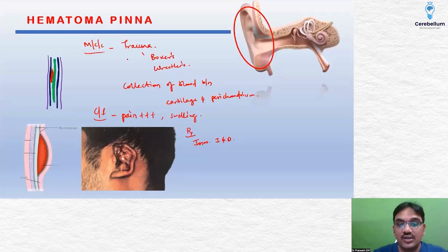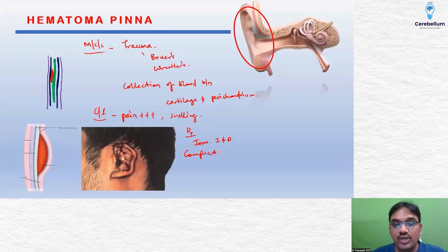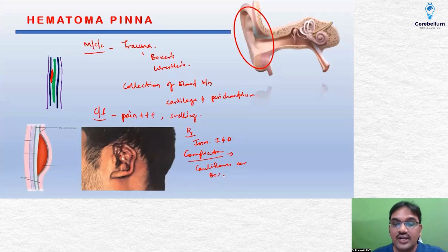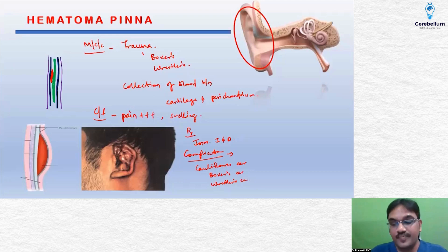So, regarding cauliflower ear or boxer's ear: if you do not perform immediate incision and drainage, complications will occur — the ear will get malformed and is called cauliflower ear, boxer's ear, or wrestler's ear. Any MCQ from this topic should be answered easily.